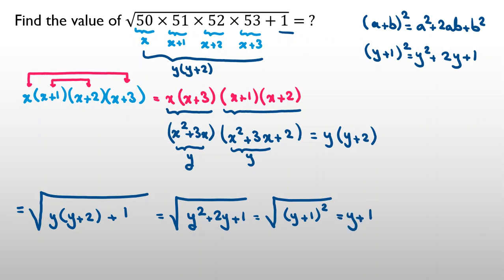So y is what? Y is x squared plus 3x. It's x squared plus 3x. X is what? X is 50.